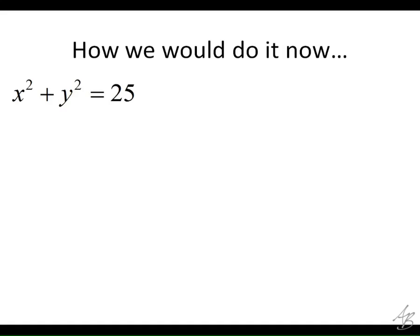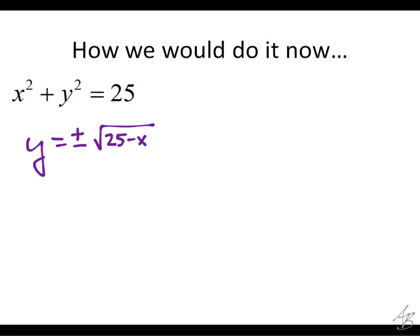Let's say we have this circle centered at the origin with a radius of 5 — that would be this equation right here. If we want to take the derivative to find the slope of this circle at any point, we'd have to solve for y. So y equals plus or minus the square root of 25 minus x squared. This is actually two separate functions: the plus part is the top half of the circle, the minus part is the bottom half. To simplify things, I'm just going to look at the top half.